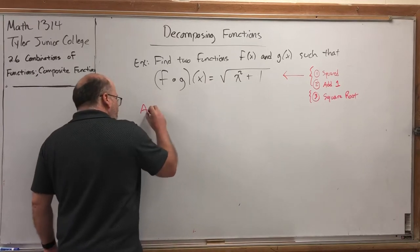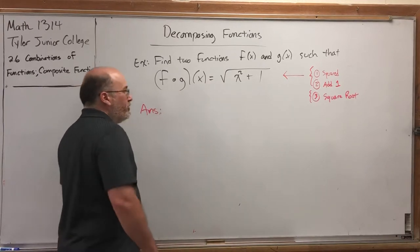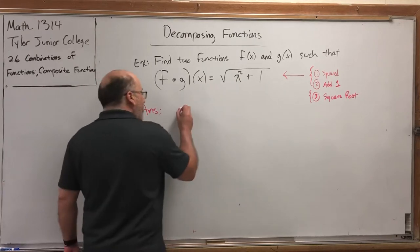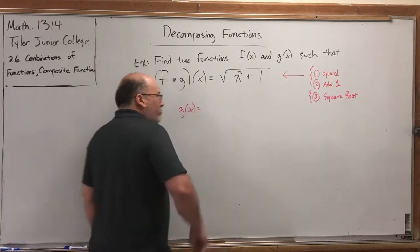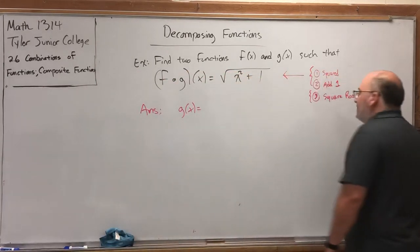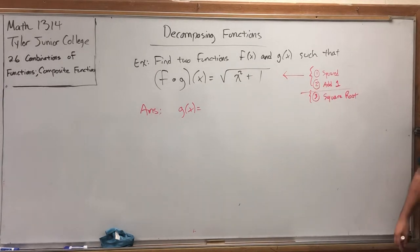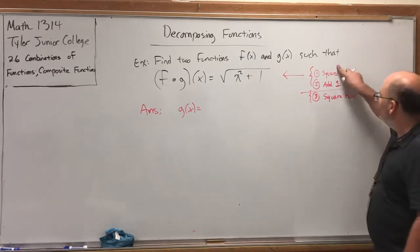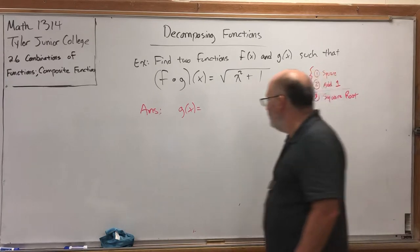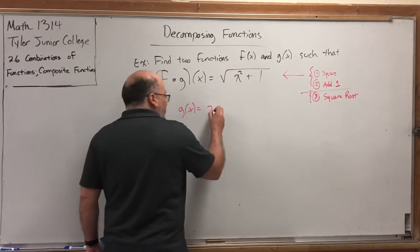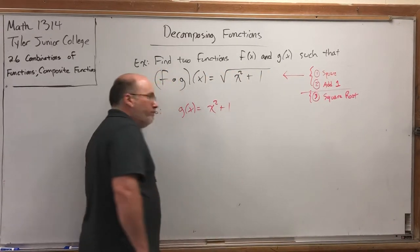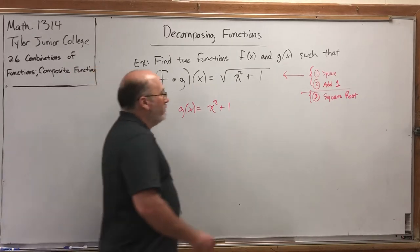Answer. To decompose a function, you start with the inner function. The inner function starts at the beginning of this list, and stops where you choose to stop it. So, we're going to make the first function, the inner function, square and then add 1. Square and then add 1. So, g of x will take something, square it, and then add 1.